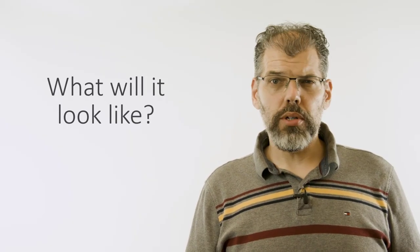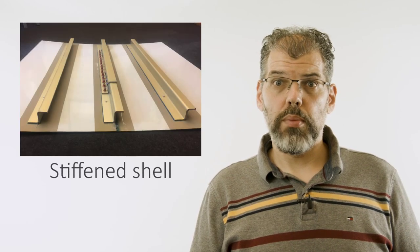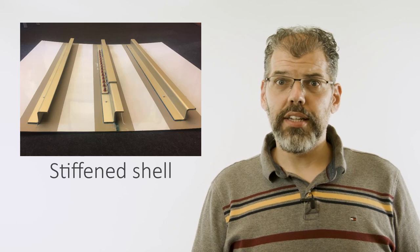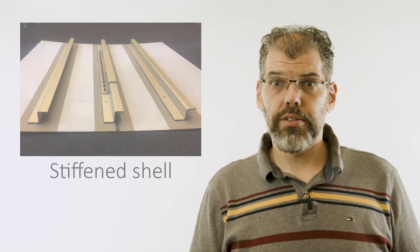But what will the wing skin panel look like? From our knowledge about aircraft structures, we know that a wing skin panel typically takes the form of a stiffened shell. That is, a relatively thin plate of material with reinforcing stiffeners. But at this stage of the design, even this is too detailed a configuration to consider.